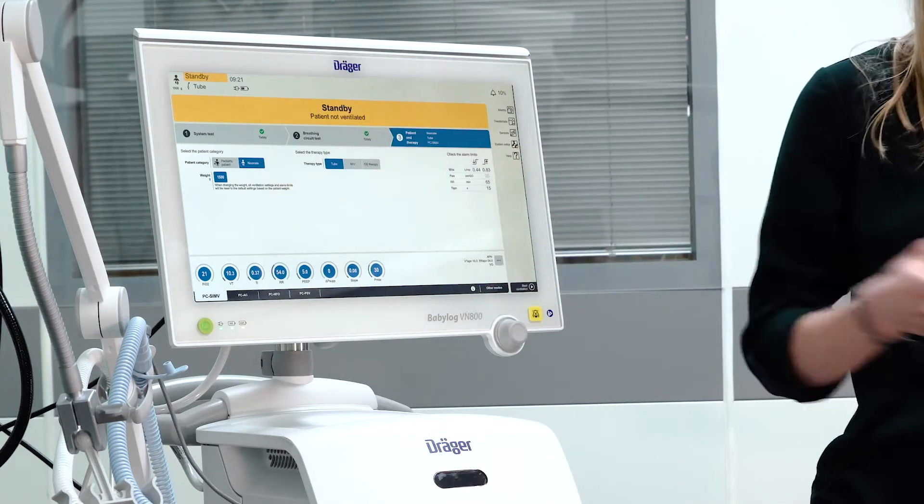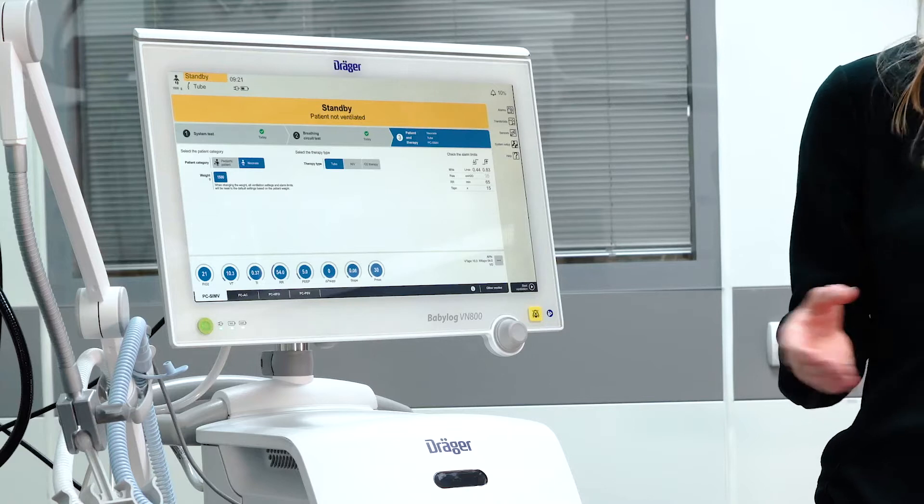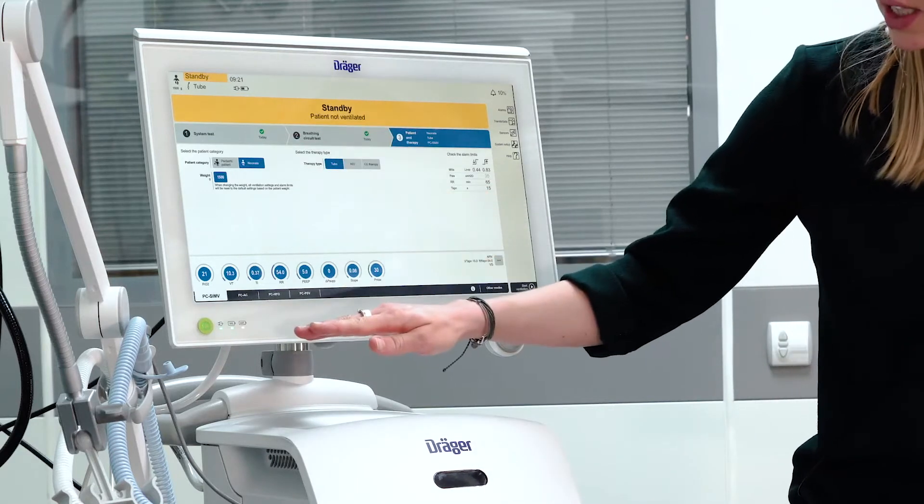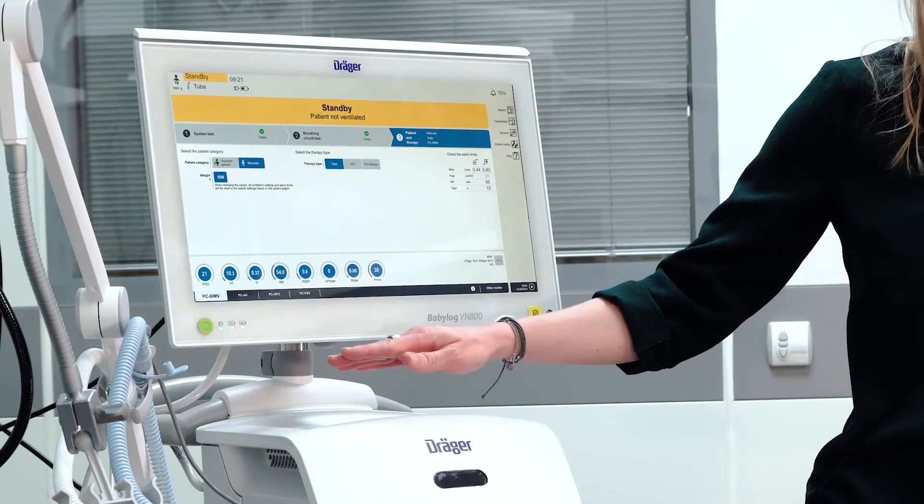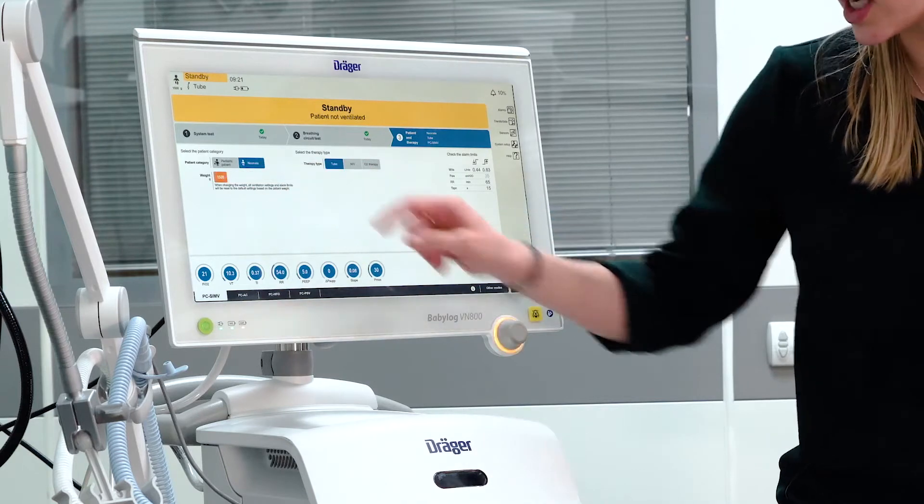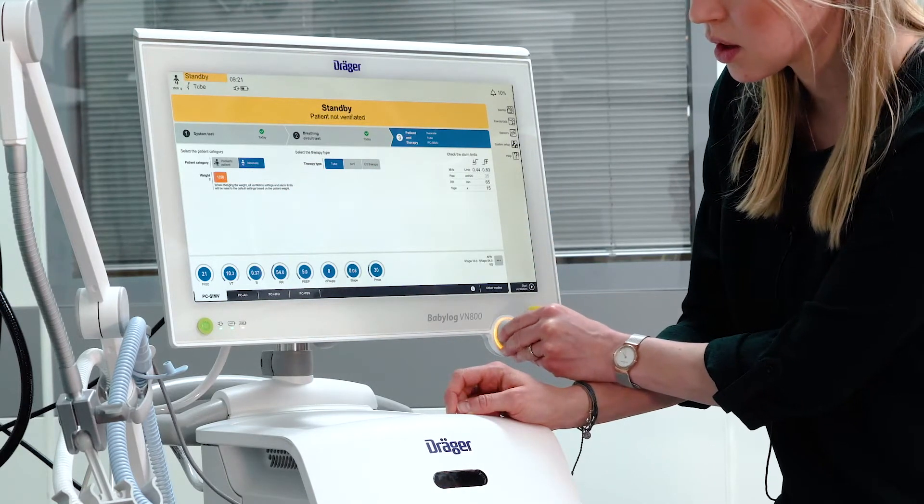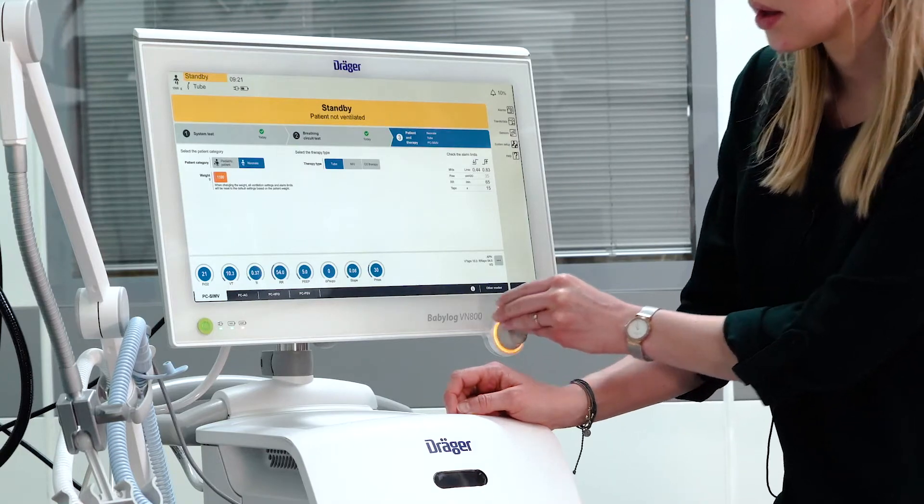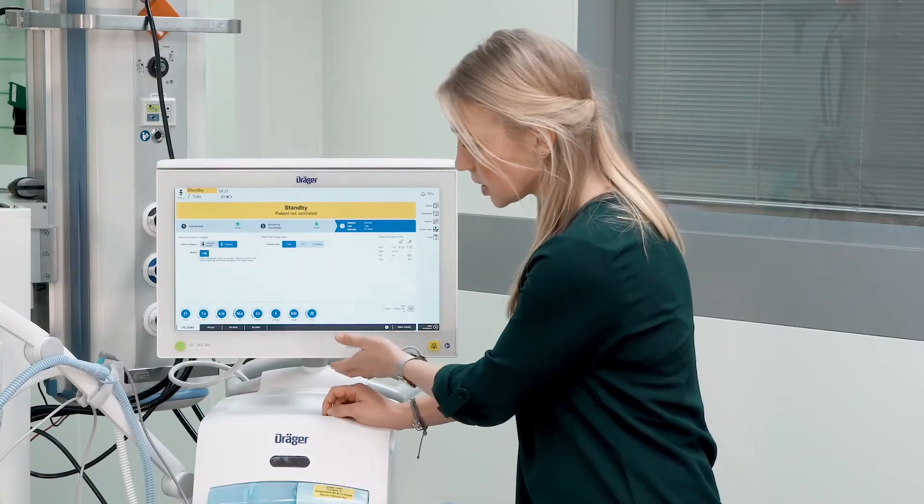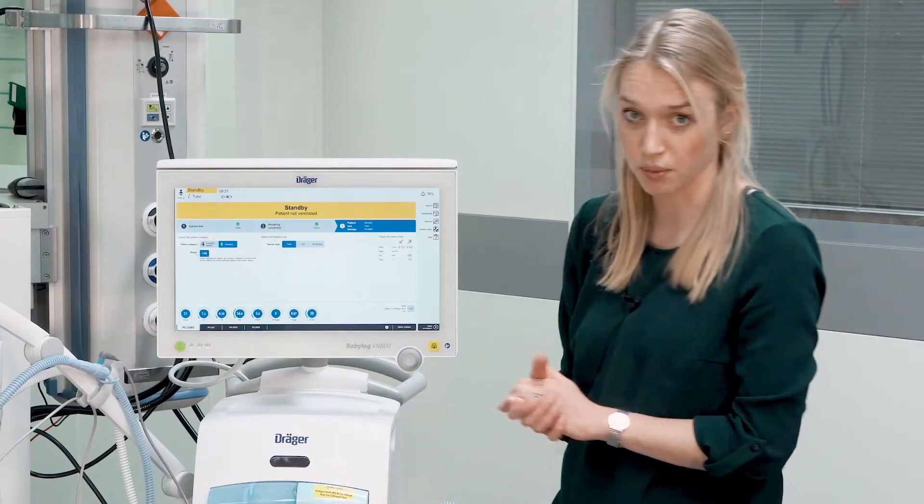If configured, you can choose to directly set the current body weight of the patient. The ventilator will start with a pre-configured ventilation mode. If you adjust this current body weight, the ventilation settings will adapt respectively to the body weight.